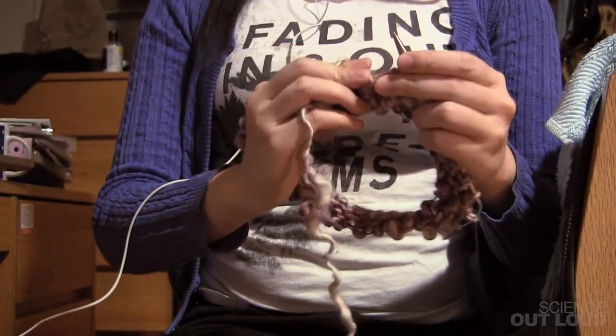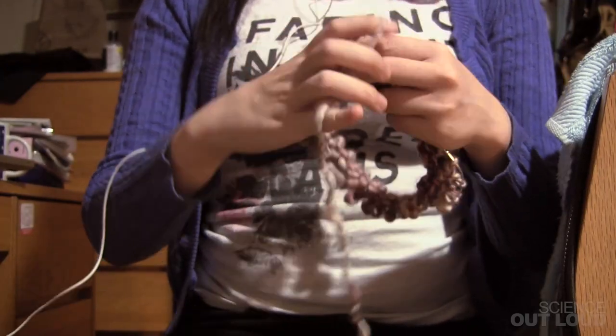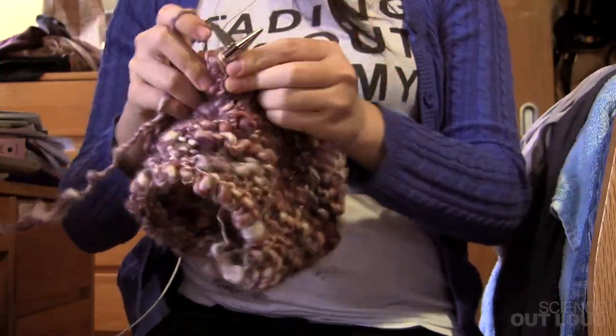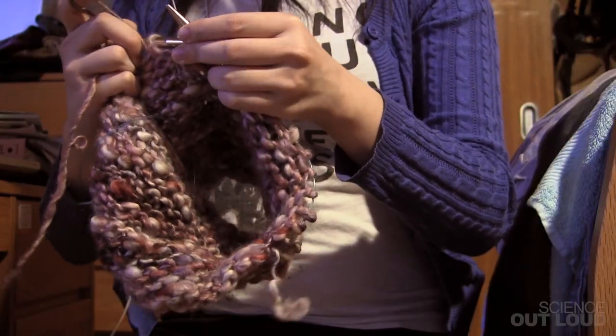I could knit a Mobius scarf, starting from its center and introducing the twist when I first cast on. Then, by knitting all along the Mobius strip's one edge, I can gradually widen the scarf to produce a loop without any seam.